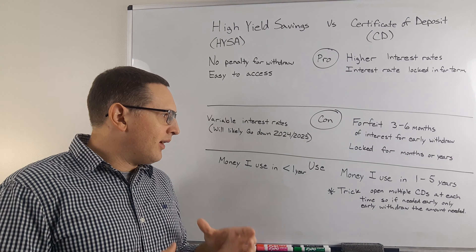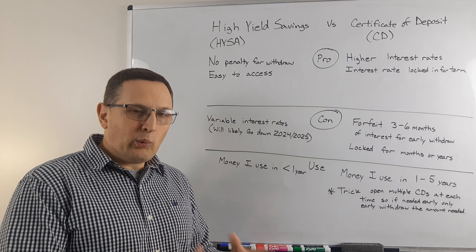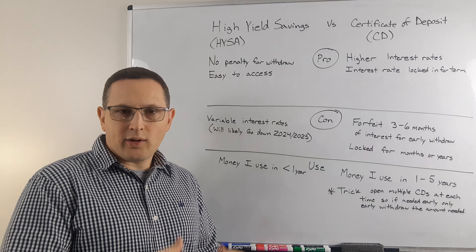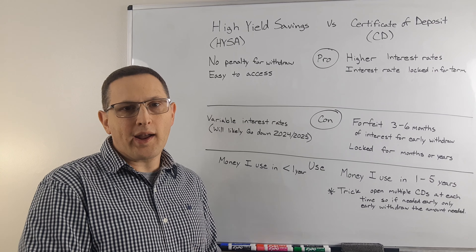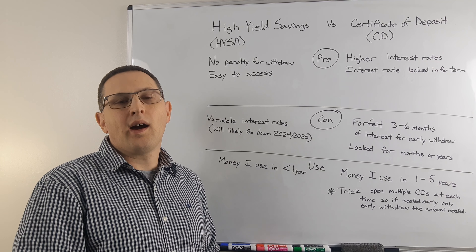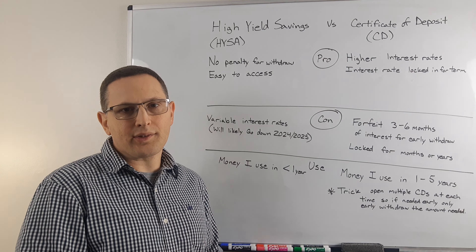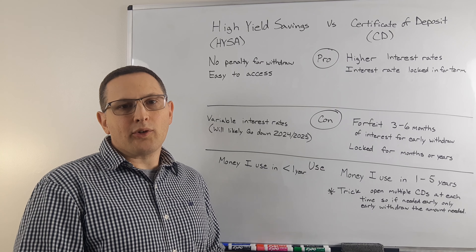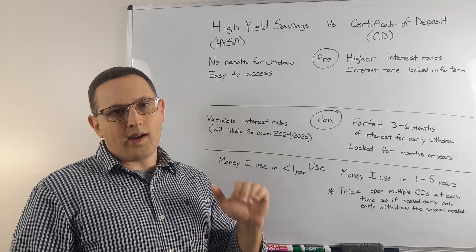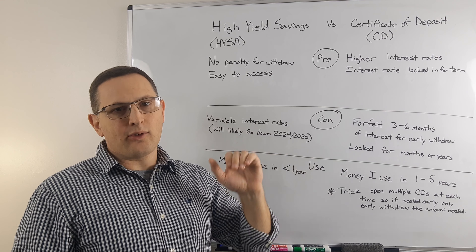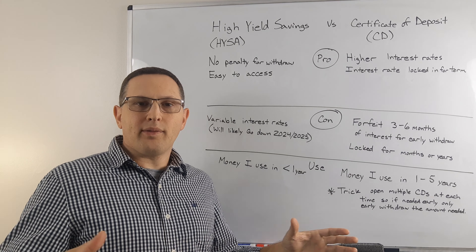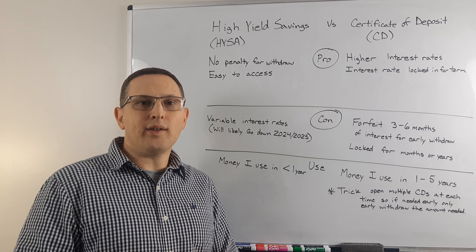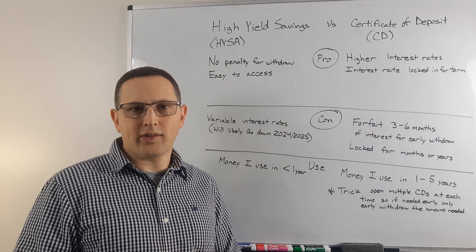Let's say I have CDs at one year. I'm not going to make one CD for $50,000 in a single CD, because if I have to break it early, I have to pay the penalty on all $50,000. So instead I'll put like five grand, ten grand, twenty-five grand — different amounts in different CDs, all maturing at the same time.